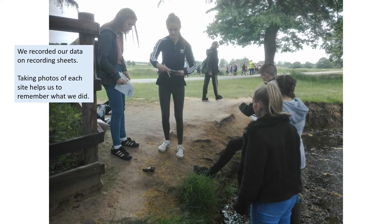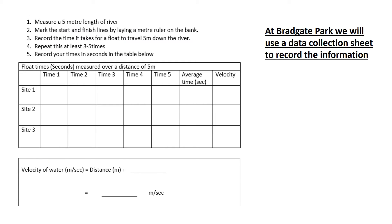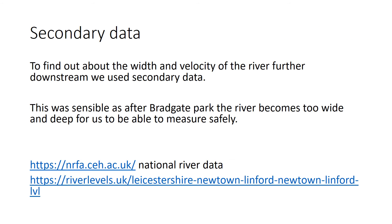To further help us with our work, at each of the sites we took some photos to help us remember what we did. In the field we had clipboards and data recording sheets so we could record information quickly and easily, ready to process the data back in the classroom. Back in the classroom we also collected our secondary data — we could find out about the width and velocity of the river further downstream by using information on the National Rivers Archive.